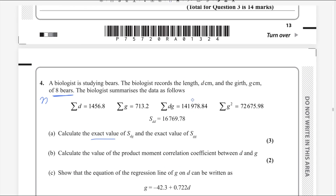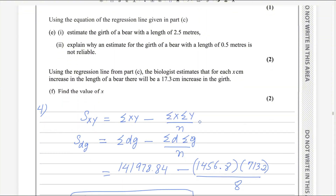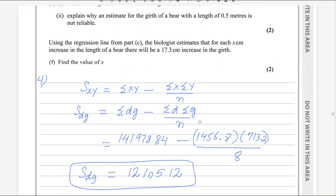In the second part of this question, we need to find summary statistics Sgg. For finding this one, x and y are the same — both are g — so when both numbers are multiplying, it becomes squared. So you can get the answer directly. For the second part, you can make the formula like this: summary statistics of Sgg equals sum of g squared, because both are the same, it becomes square instead of writing g and g.